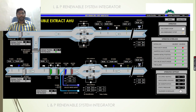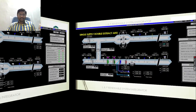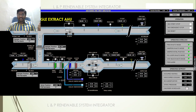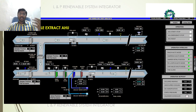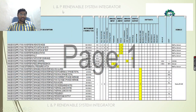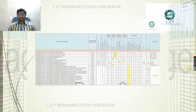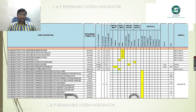Regardless of AHU type — double supply double extract, single supply double extract, double supply single extract, or single supply single extract — differential pressure switches can be installed. From a monitoring standpoint, the signal is a digital input. On the supply fan side, the differential pressure switch provides a digital input that can be treated as an alarm — it is a volt-free contact. The same applies to the extract fan side.